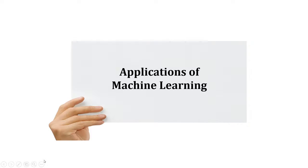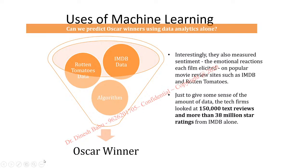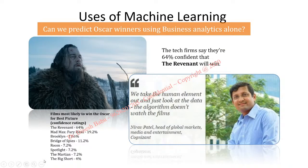Where can we apply machine learning? Machine learning is applicable everywhere. One prestigious example: the companies Clarembridge and Cognizant predicted the Oscar winner for Best Picture one month in advance using IMDB ratings, reviews, and Rotten Tomatoes ratings. They predicted that the movie 'The Revenant' would win, and the same movie won the Oscar. Machine learning algorithms are very powerful in terms of accuracy and prediction.